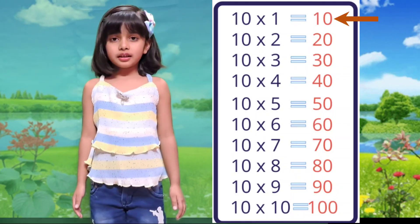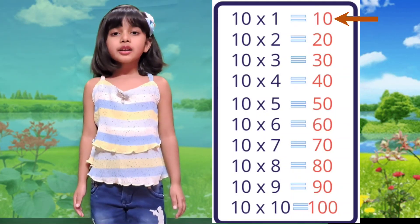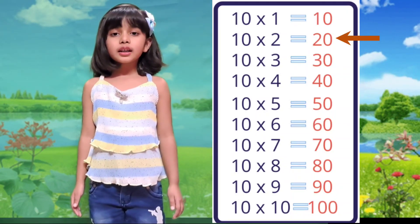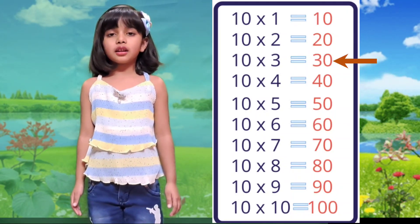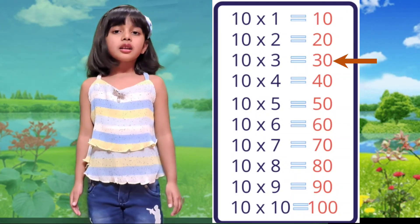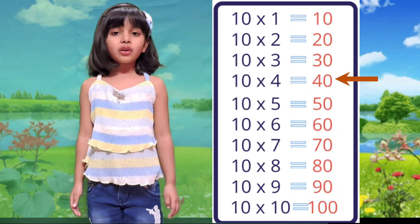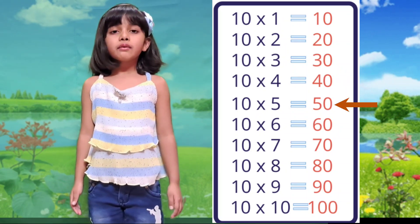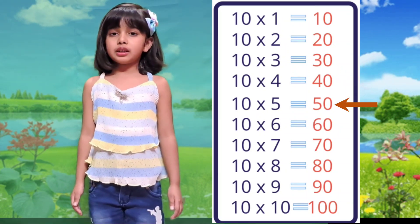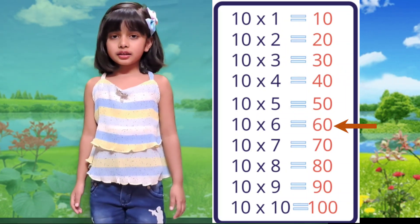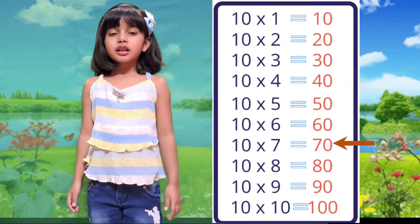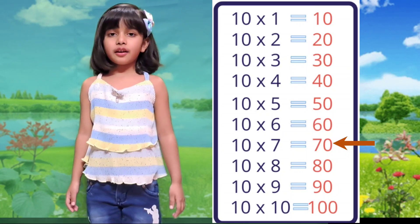Table of 10. 10×1 is 10, 10×2 is 20, 10×3 is 30, 10×4 is 40, 10×5 is 50, 10×6 is 60, 10×7 is 70.